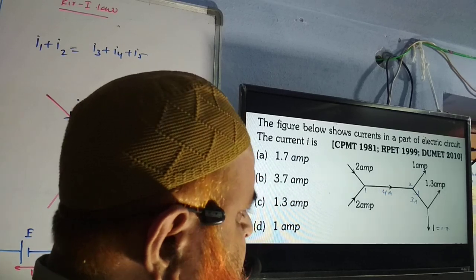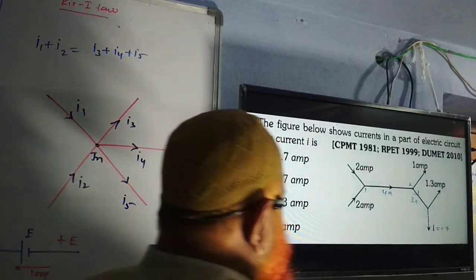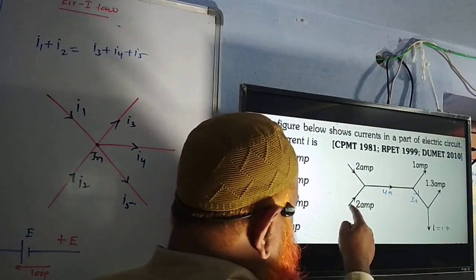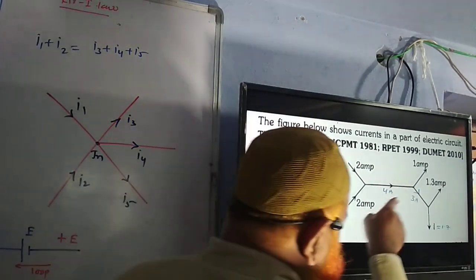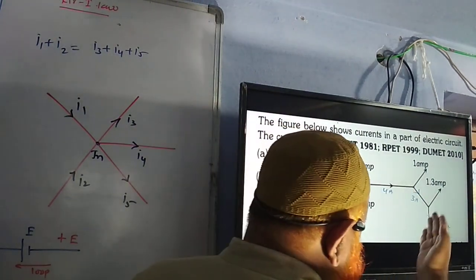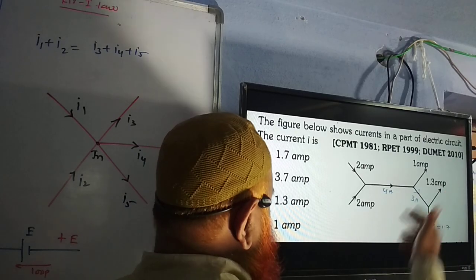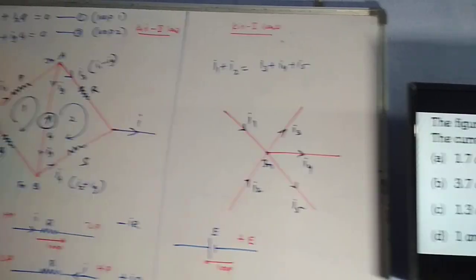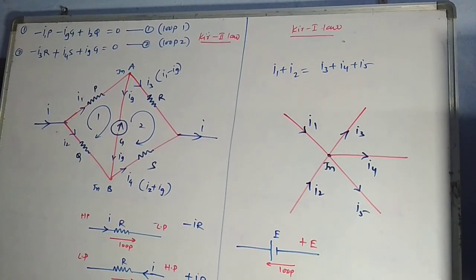The first option is correct. Let me recap: at the first junction, two plus two amperes meet to become four amperes. One ampere leaves, leaving three amperes. From those three amperes, 1.5 amperes leaves, and the remaining is 1.7 amperes, because 1.5 plus 1.7 equals three amperes. This is purely based on Kirchhoff's first law.